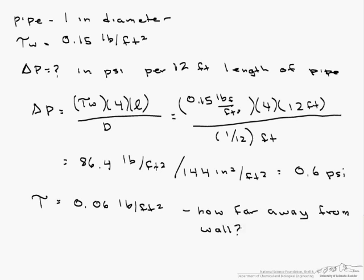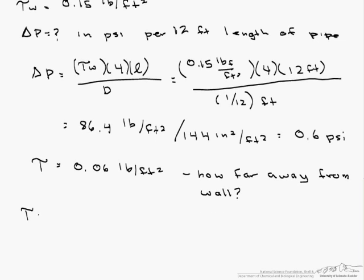So we need a relationship between the shear stress at the wall. The shear stress at any point is 2 times the shear stress at the wall times whatever that point is, that radius, divided by the diameter.